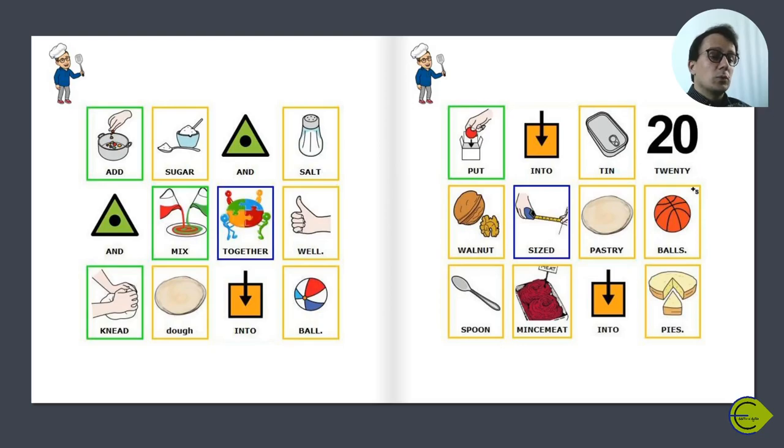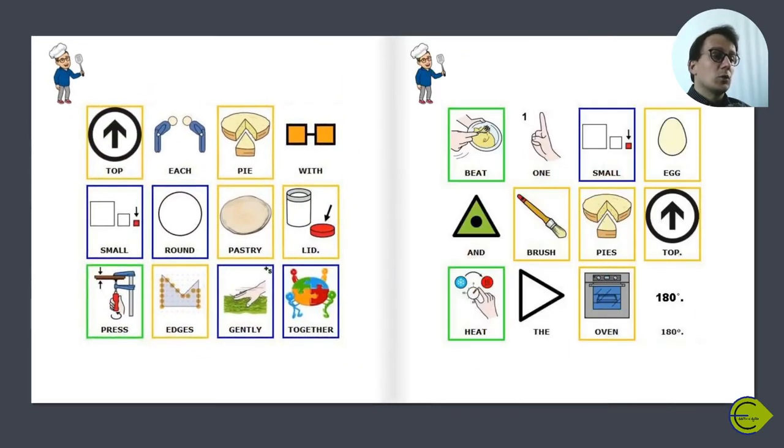Spoon mincemeat into pies. Top each pie with a small round pastry lid. Press edges gently together. Beat one small egg and brush the pie tops.